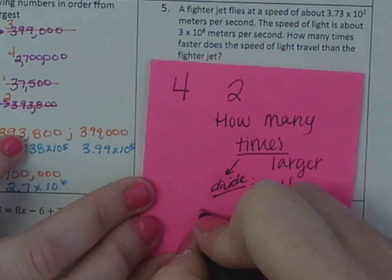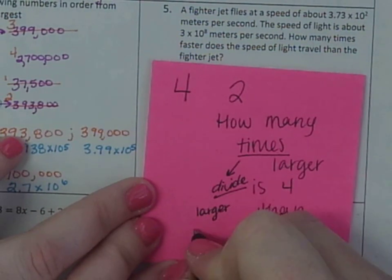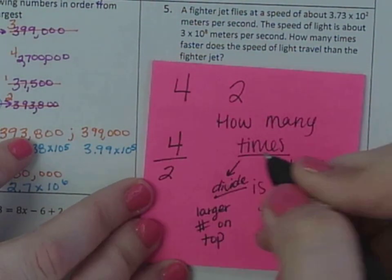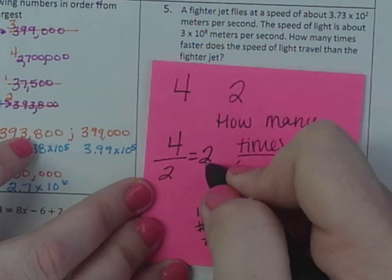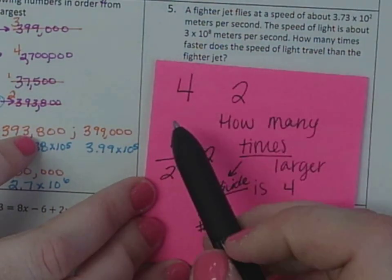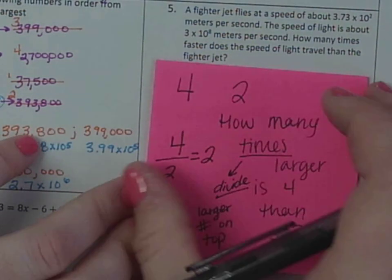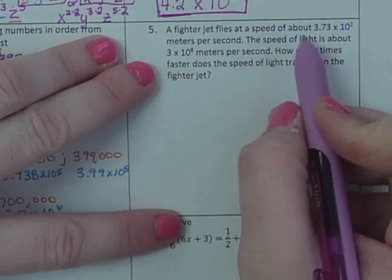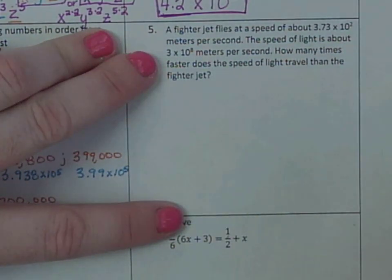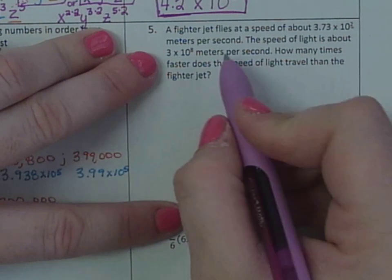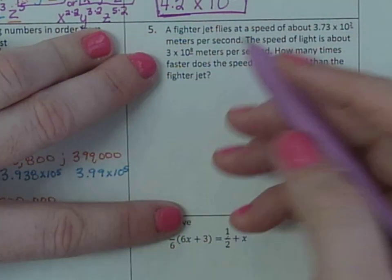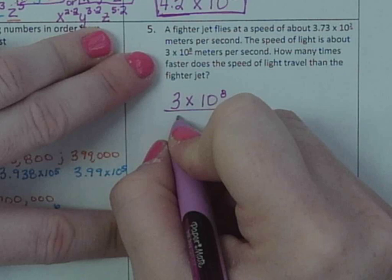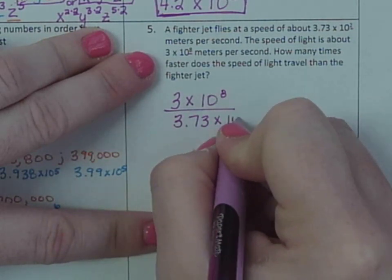Because the opposite of multiply, which is how many times, if you're trying to find out how many times, then you would have to do the opposite, which is divide. So I'm going to divide and you want to divide the larger number on top. So if I do 4 divided by 2, 4 divided by 2 is 2. So 4 is 2 times larger than 2. So when we look at this one, do you think a fighter jet flies faster, or do you think the speed of light is faster? Well, if you don't know, look at the exponents. Which one has a larger exponent? The speed of light. So I'm going to write that one on top. So it would be 3 times 10 to the 8th over 3.73 times 10 squared.